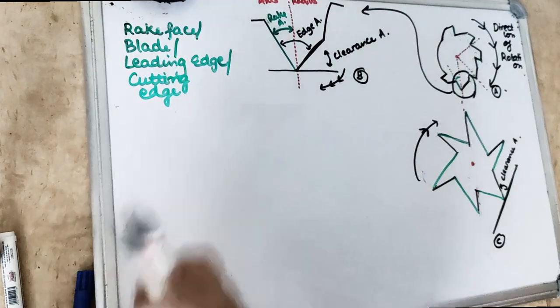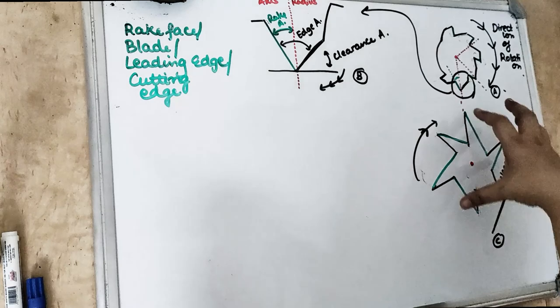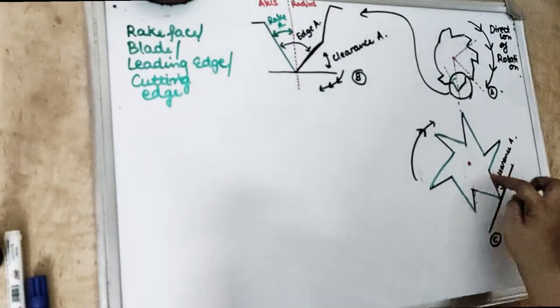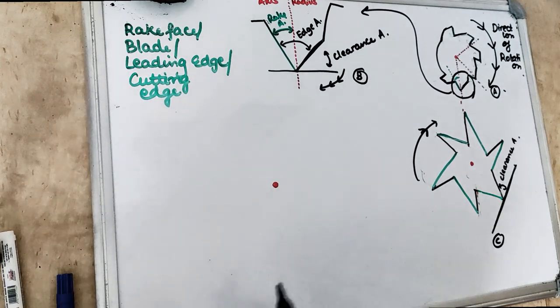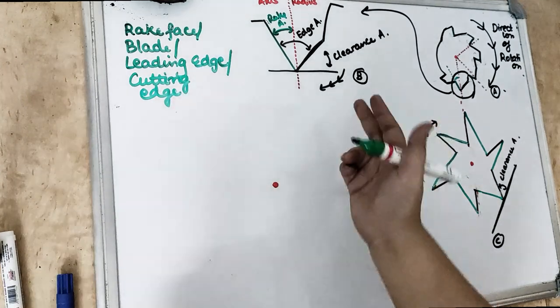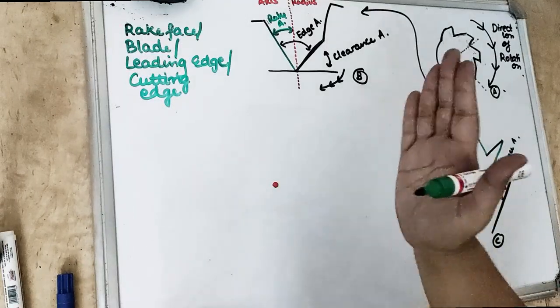Now to understand the rake angle, this is the cross section and I am going to enlarge this particular view. This is the center of the file and the green color is our blade — the part which is going to contact the surface first and cut the surface first. Suppose the file is going to rotate like this — this surface is going to touch first. When this green part touches first, it is going to take away a little part of this surface.